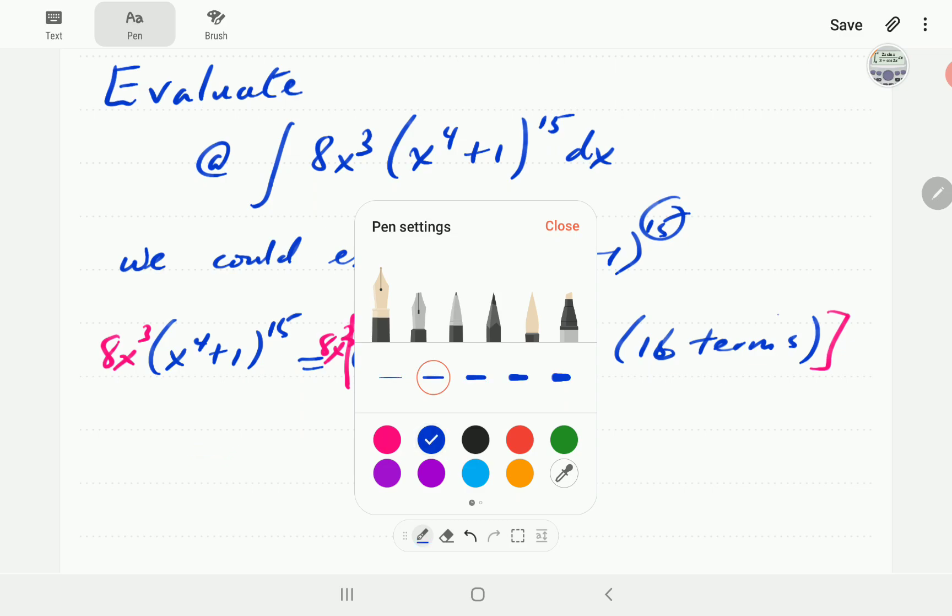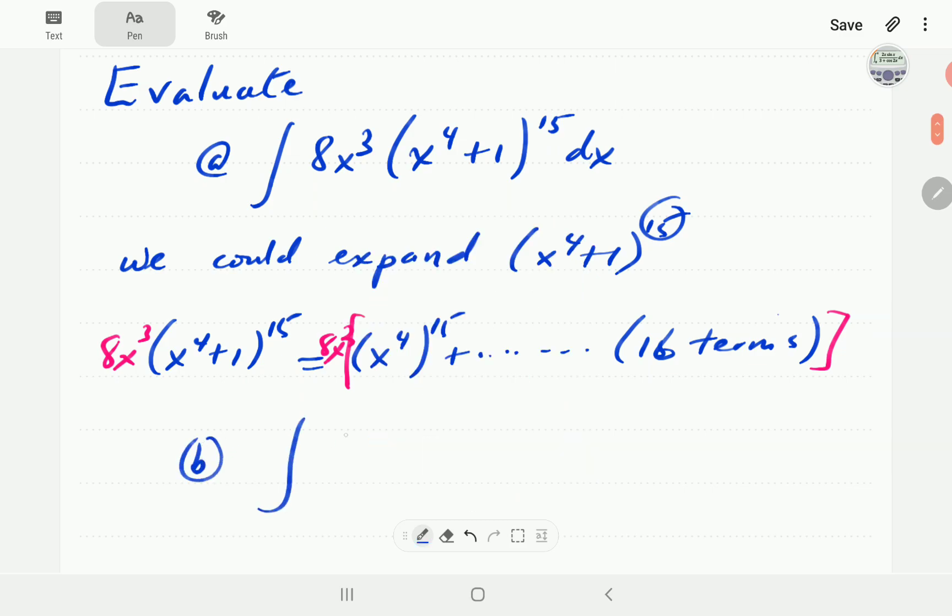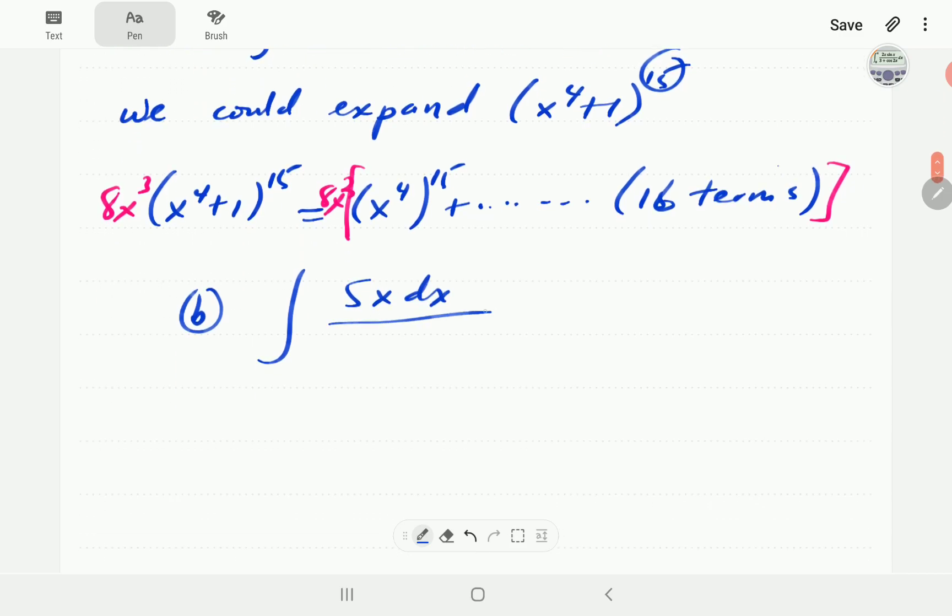Next, in part b, suppose we have 5x dx divided by the square root of x squared plus 3.